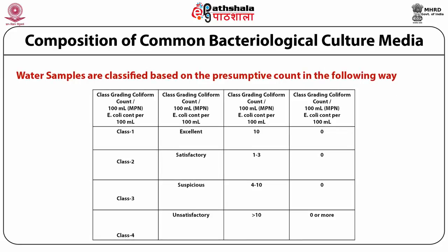Water samples are classified based on the presumptive count. For Class 1, the grade is excellent, with a coliform count of less than 10 per 100 ml MPN and an E.coli count of 0. For Class 3, the grade is suspicious, with a coliform count between 4 to 10 per 100 ml MPN and E.coli count per 100 ml of 0. For Class 4, the grade is unsatisfactory, with coliform count greater than 10 and an E.coli count of 0 or more.